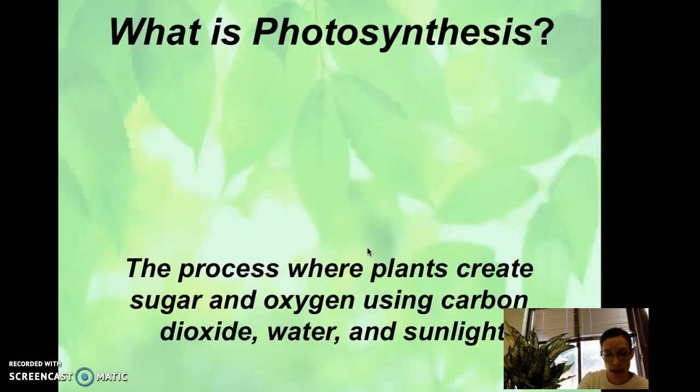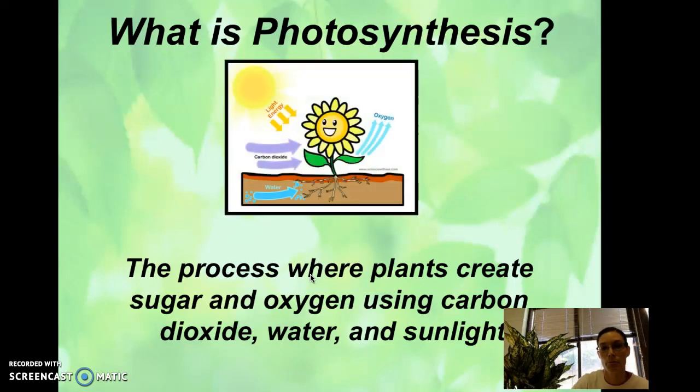So at the top of your page, it says photosynthesis is the process. So you're going to copy this down. In which plants create sugar and oxygen using carbon dioxide, water, and sunlight. And here's our picture again. So they take in carbon dioxide and water. There has to be sunlight present. And then they're going to give off oxygen and also produce sugar.